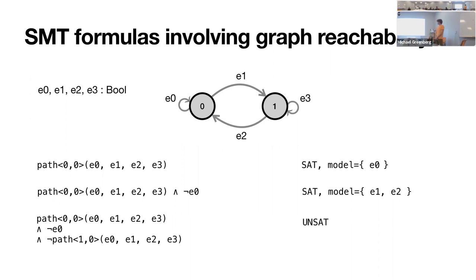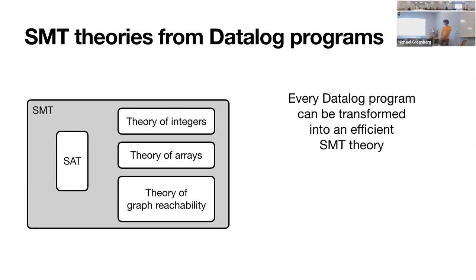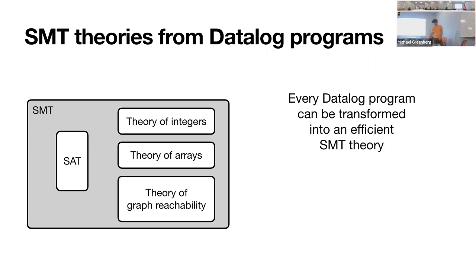The idea of this work is: how do we go about making this a reality in a relatively low cost way for people who use SMT solvers? We use the claim that every datalog program can be transformed into an efficient SMT theory. So for this theory of graph reachability, we should be able to just plug in the datalog program. SMT solvers are huge — hundreds of thousands of lines of C++ — but in principle we should be able to write a little bit of datalog and get a new theory out of it, and it should actually be relatively efficient.